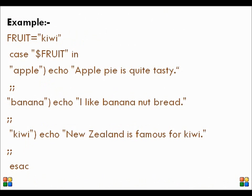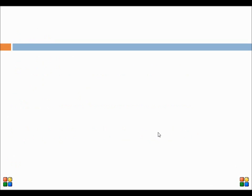For example, we have a fruit called kiwi. We compare that fruit with the available patterns: apple, banana, and kiwi. Whichever matches, accordingly we have the echo statement. Here, kiwi matches with kiwi, and the echo statement will be: New Zealand is famous for kiwi.